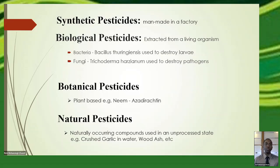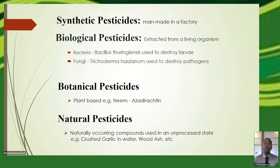You also have botanical pesticides, derived from plants. A good example is neem — oils extracted from the neem plant are made into products, with the active ingredient referred to as azadirachtin on the label. Then there are natural pesticides that have not been factory-processed — things you can make at home, such as crushing garlic, mixing it in water, and applying it to your plants, or using wood ash on your plants to reduce diseases. These can be very useful in reducing pest and disease populations.